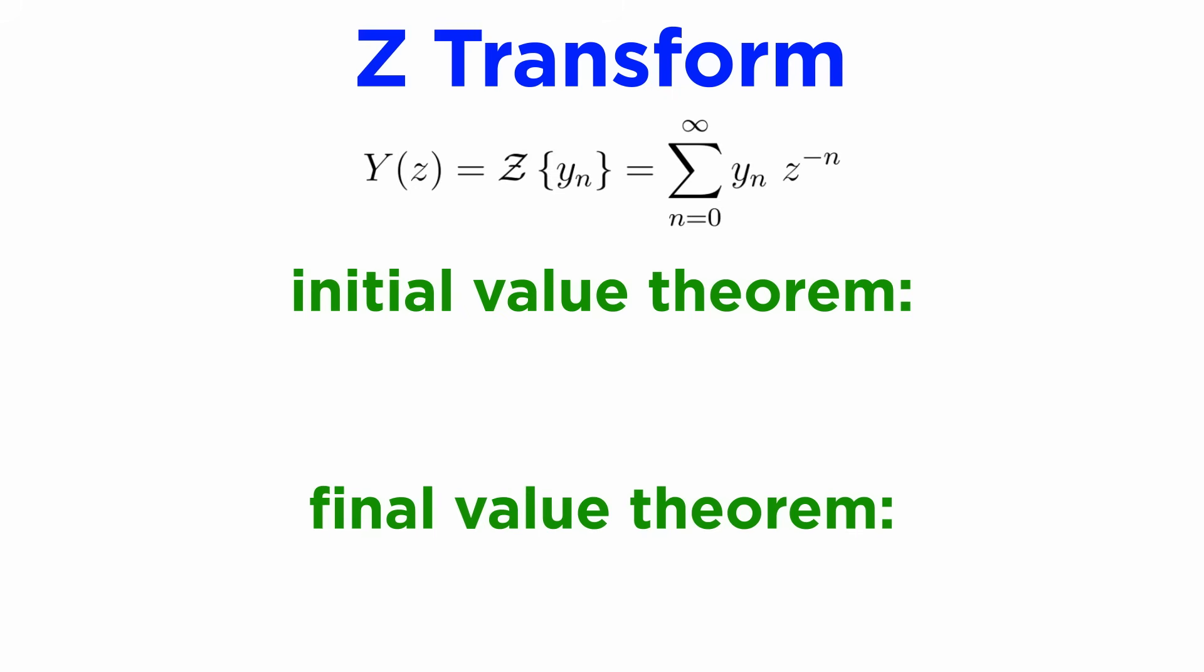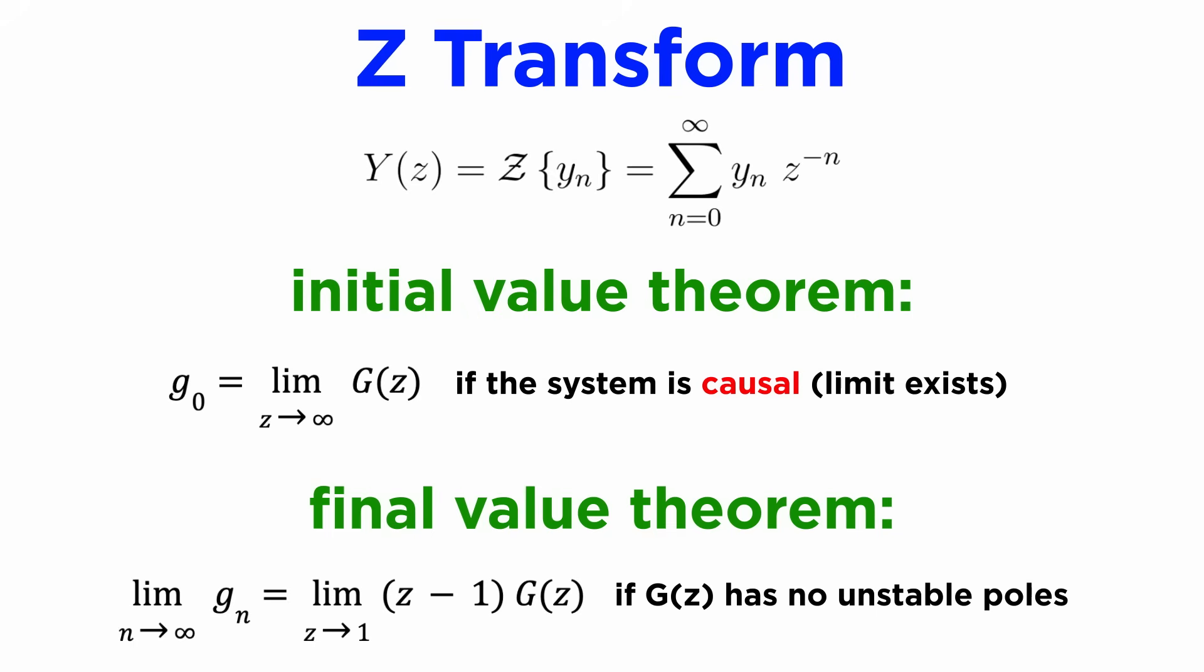Additionally, the z-transform satisfies the initial value theorem and final value theorem. As z goes to infinity, we get our initial condition, assuming our system is causal, and as z goes to the unit circle circumference at magnitude one, we get our long-term or steady state value if it exists.